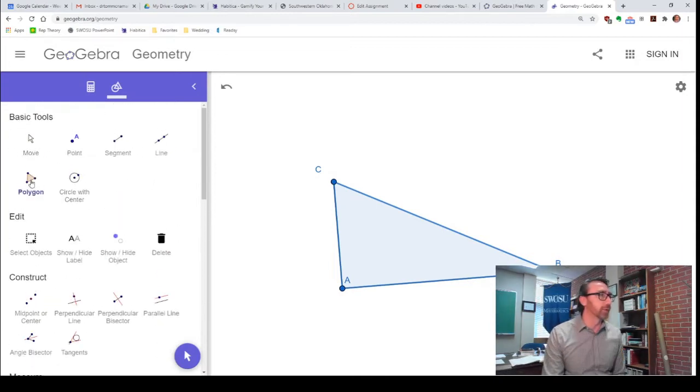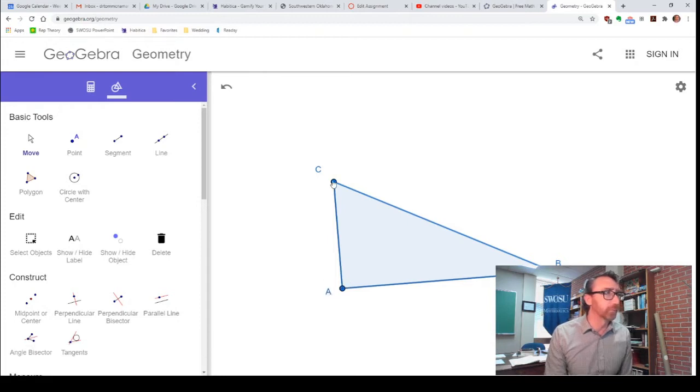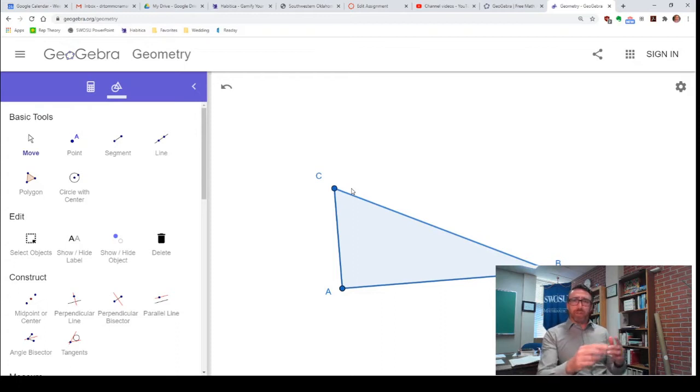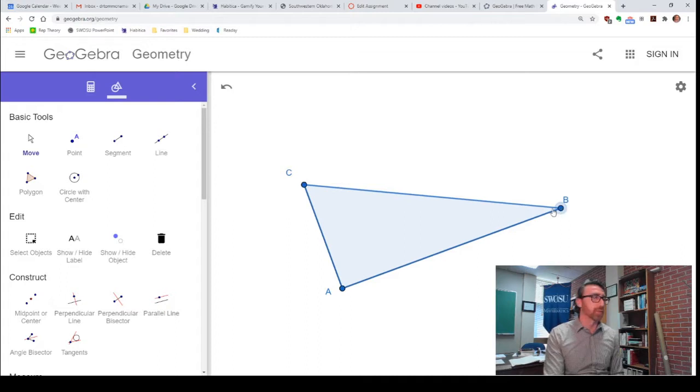And then I'll use my polygon tool down here to take A, B, C, A, and actually make my right triangle. So I've got a right triangle. That's wonderful. Now, what do I want?